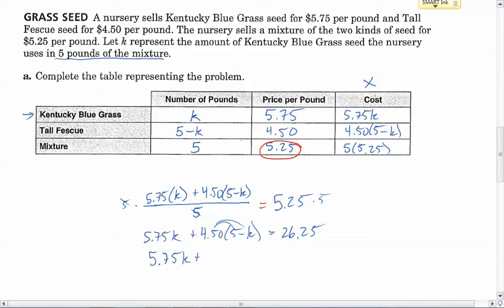Now we need to get those Ks together, but this one's inside the parentheses, so the only way to get it out is if we distribute. 4.50 times 5 is 22.50, and then minus 4.50K, which equals 26.25 still. Now we can put the like terms together, the 5.75 and the 4.50. When we put them together, we get 1.25K, because that's plus and that's minus, plus 22.50 equals 26.25.